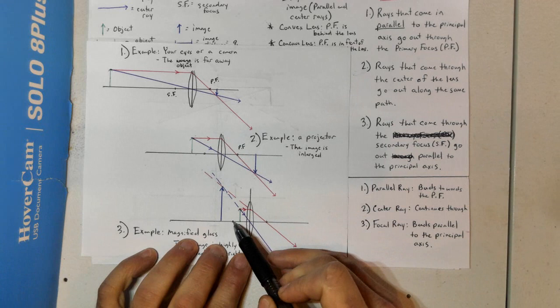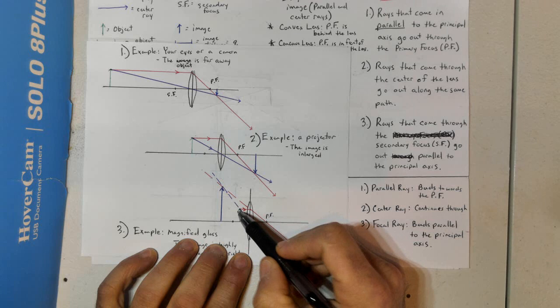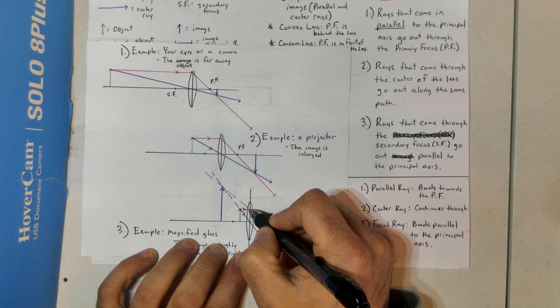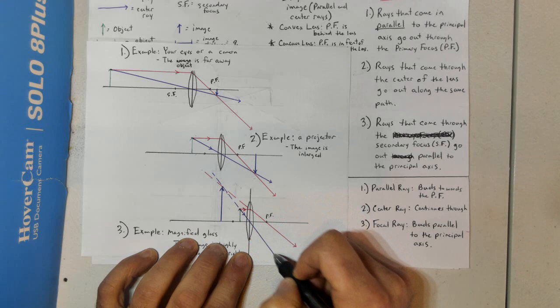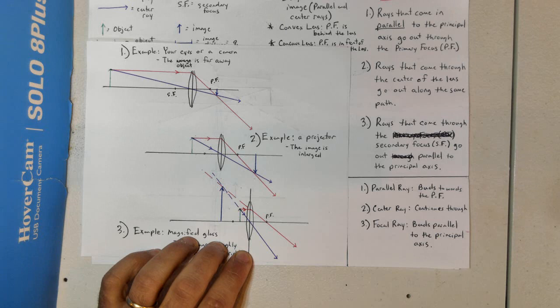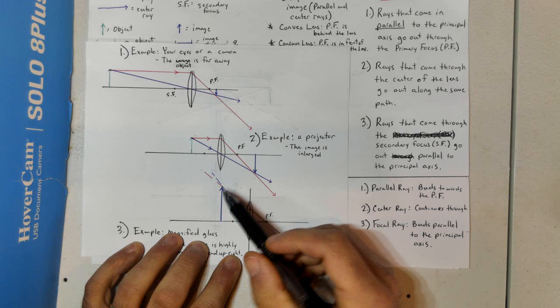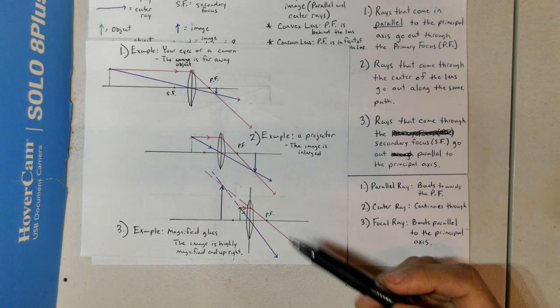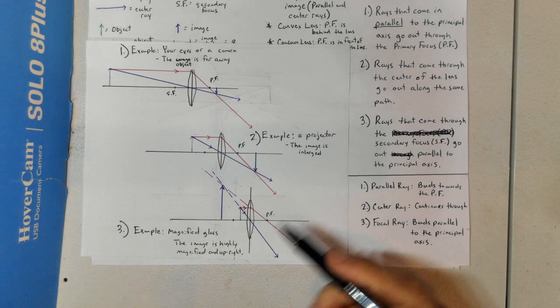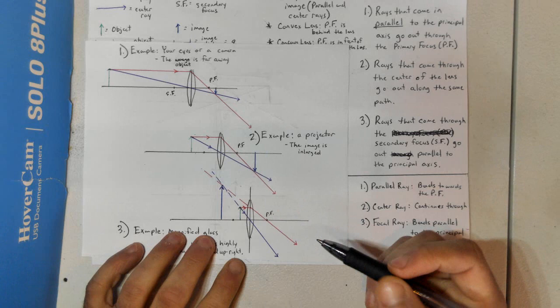The third example is something we've all seen: if the object is inside the secondary focus, we draw the parallel ray bending through the primary focus, and the center ray through the center. These two are diverging, so we trace back virtual rays, and an image is formed that is highly magnified and upright. An example of this is a magnifying glass — it makes the image larger and appears in the same direction.